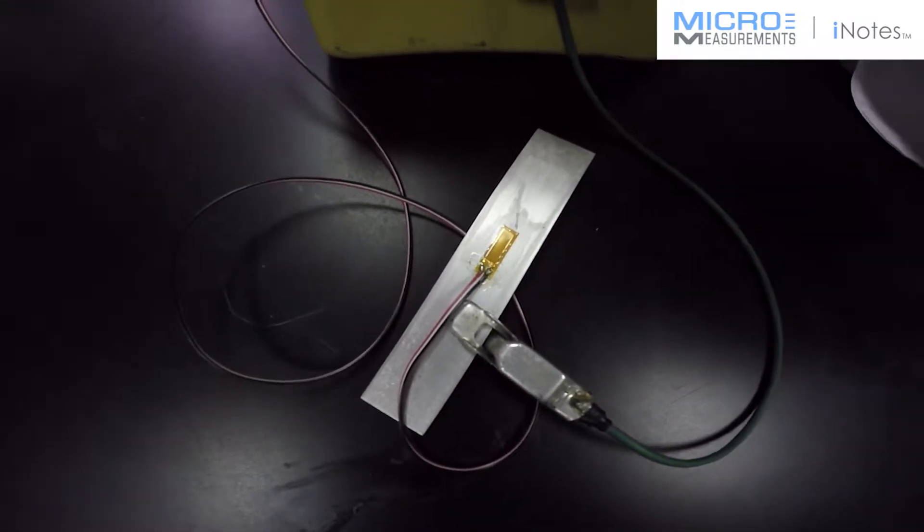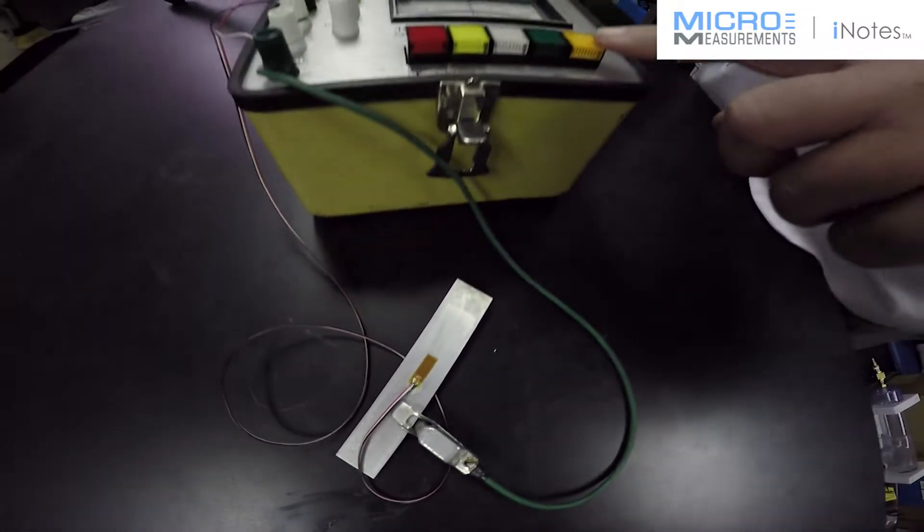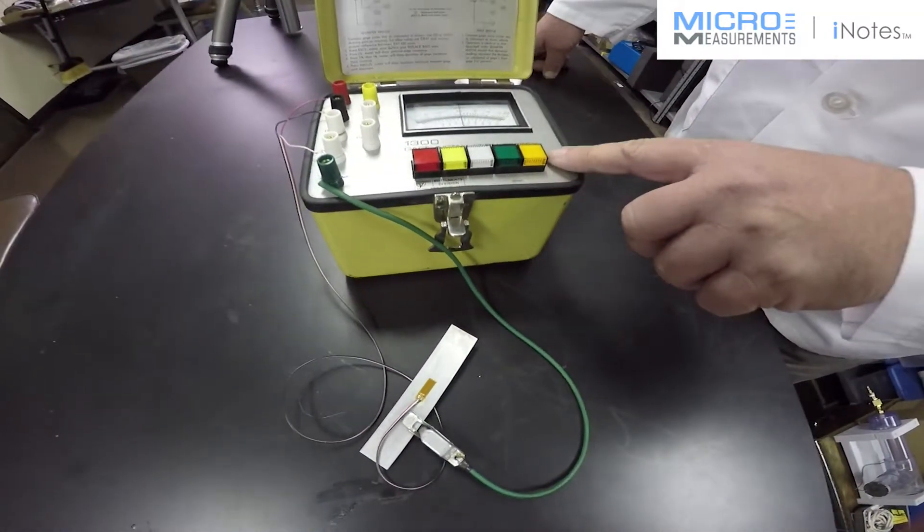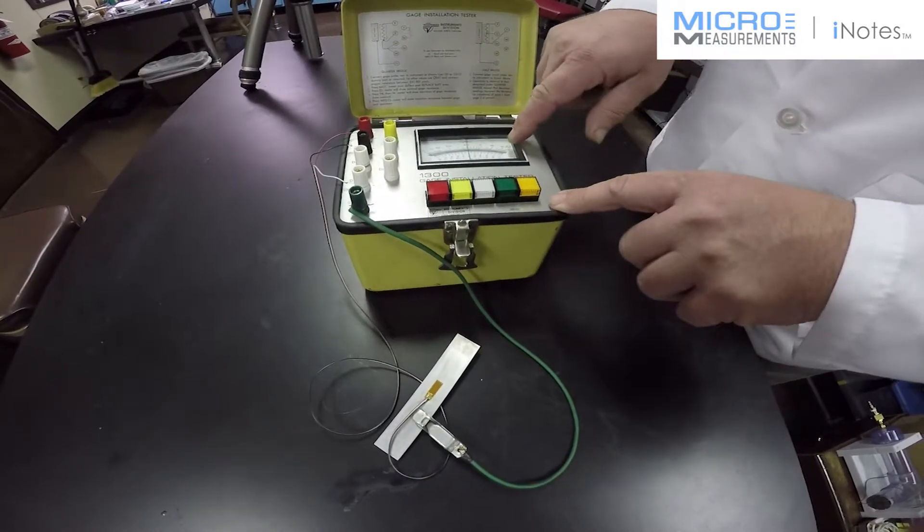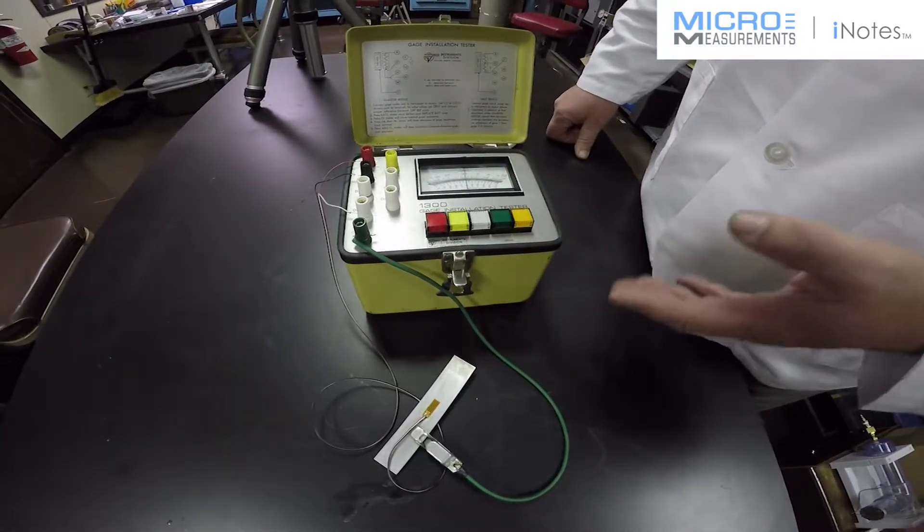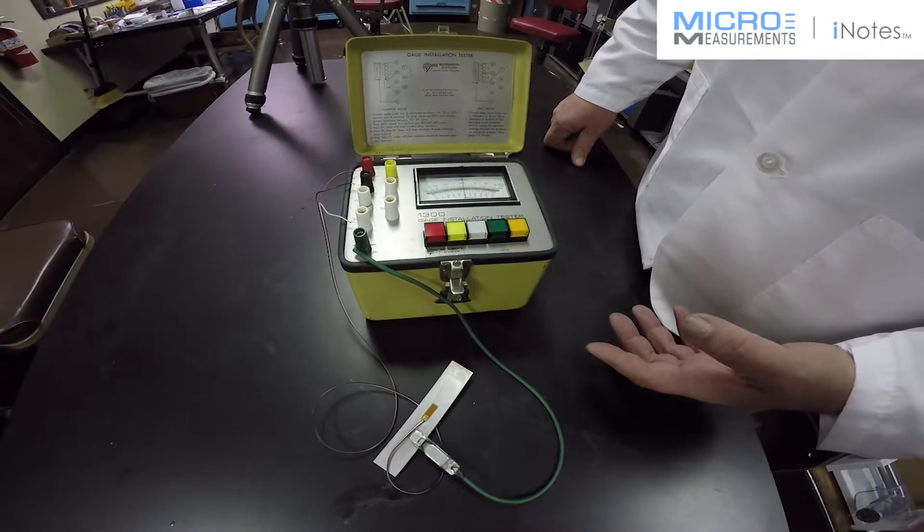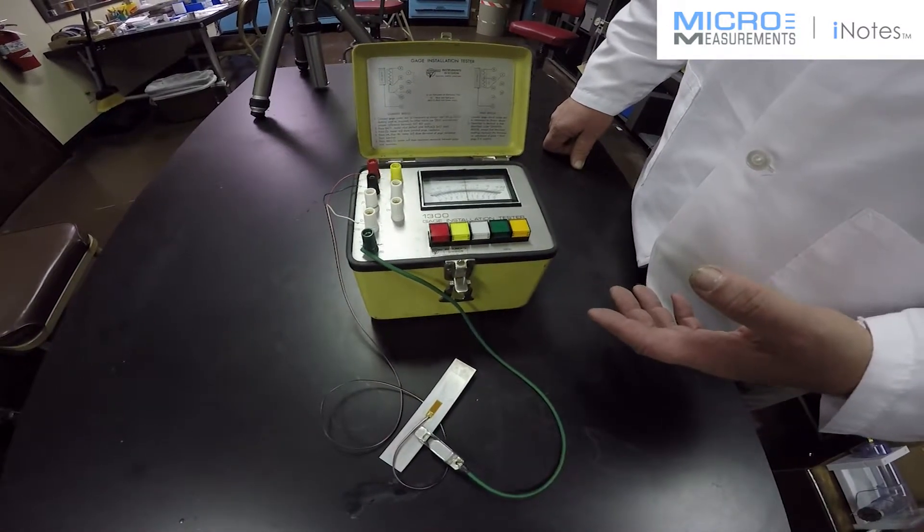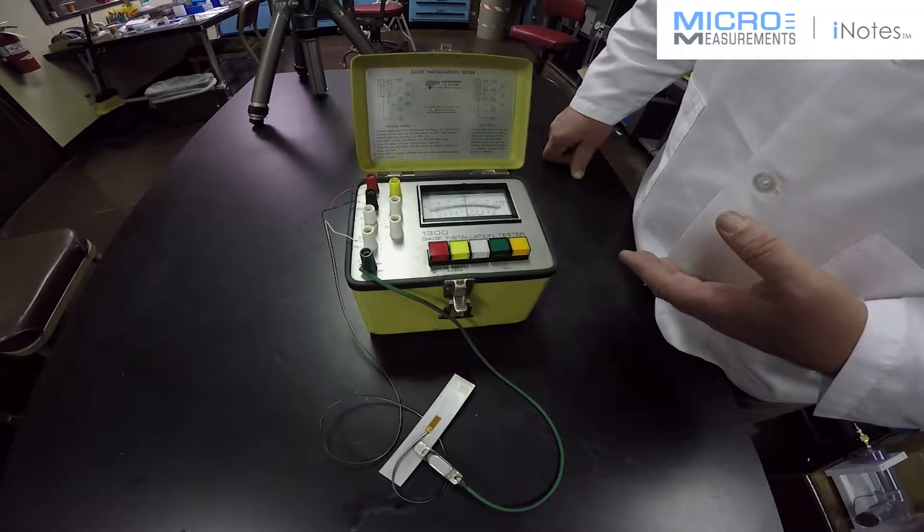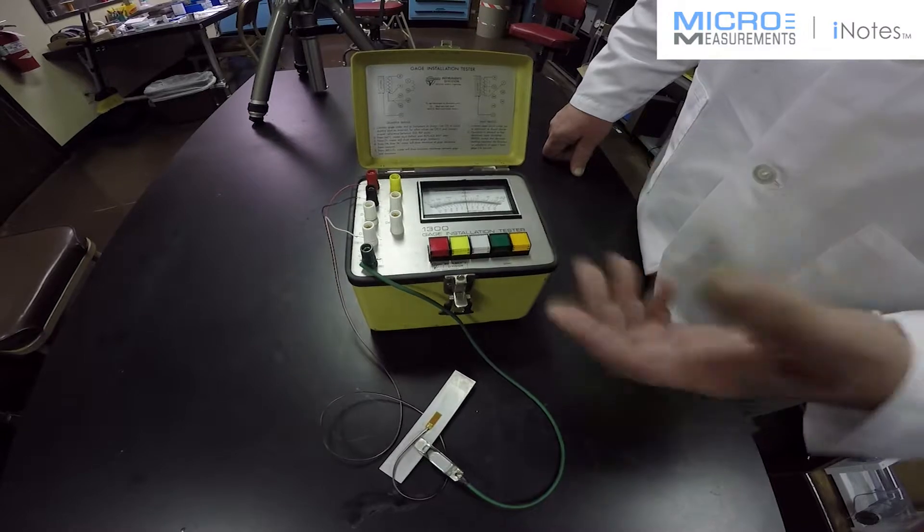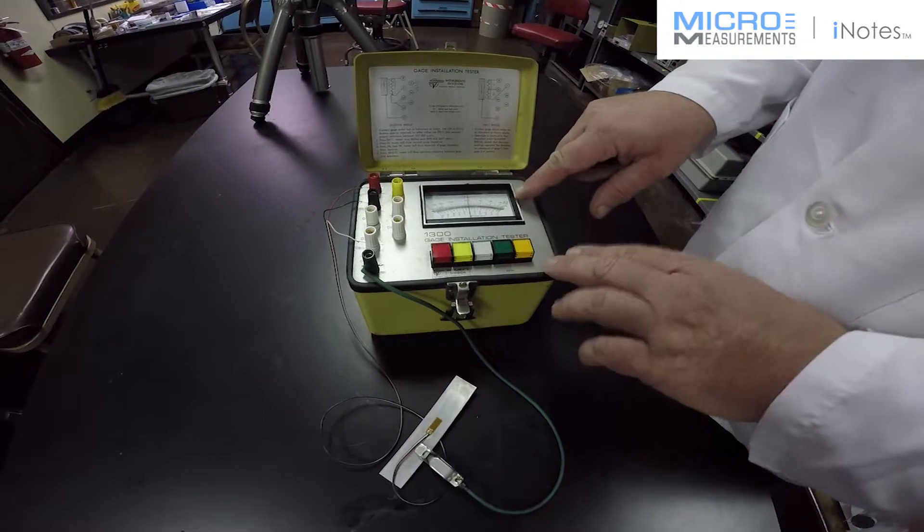So the Model 1300 accomplishes a mega ohm check using only two 9-volt batteries, about 15 volts. Now it's not a high accuracy test, but with a strain gauge, you're not interested in a high accuracy mega ohm resistance to ground reading. What you really want to know is, is it less than or greater than 10,000 mega ohms? So it's really kind of like a go or no go check. You don't need that high precision and the higher voltage that come along with that.